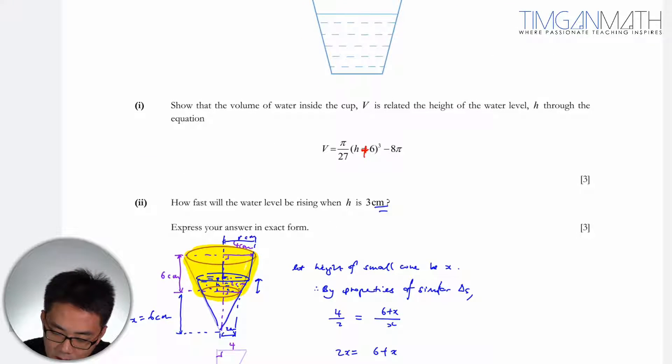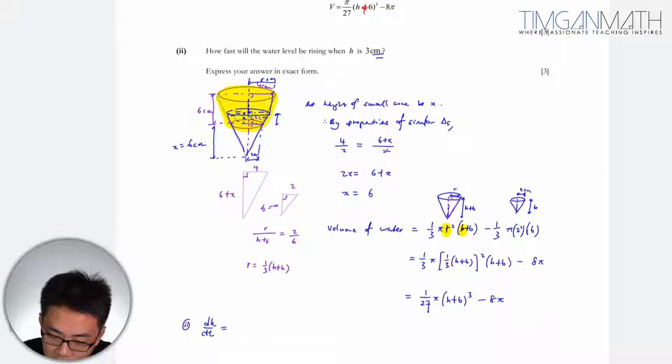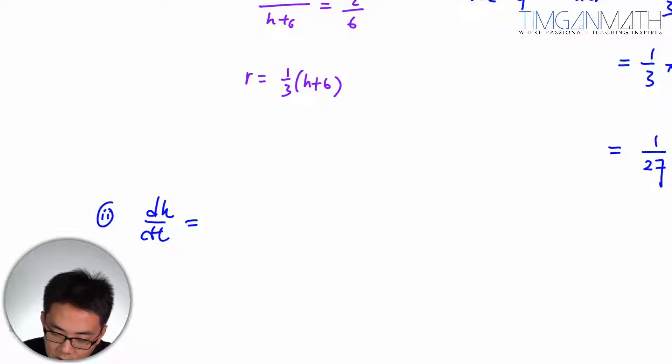Water level rising – we want to find dh/dt, right? dh/dt at h equals 3 cm. This is what we're going to find. When h equals 3 cm, what's our dh/dt?